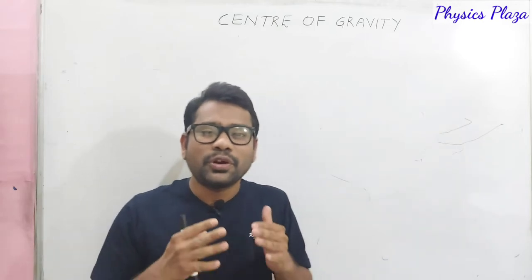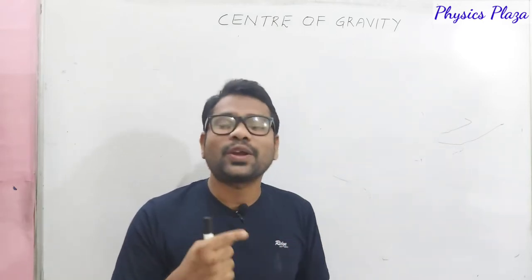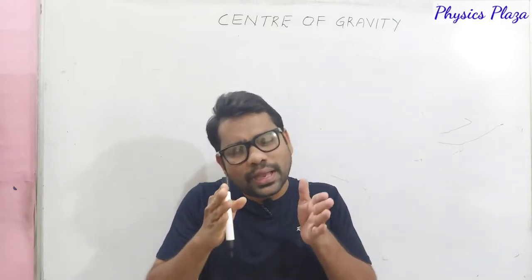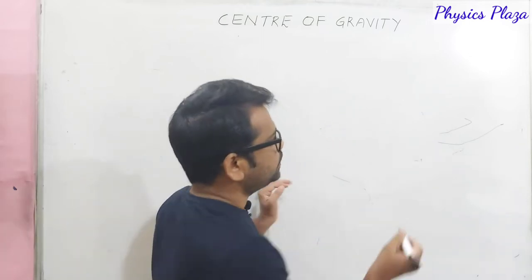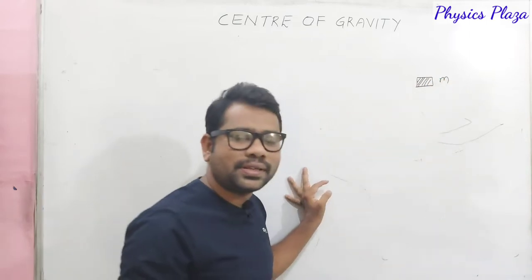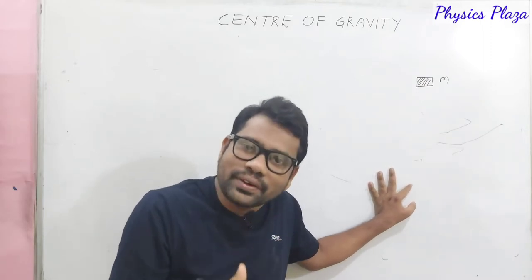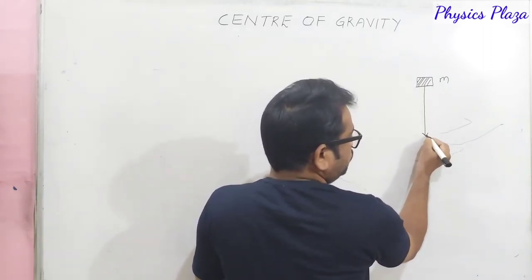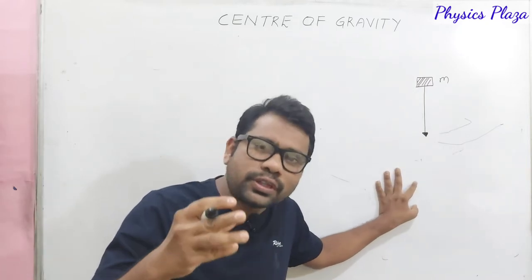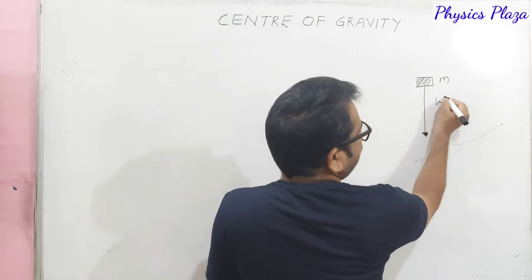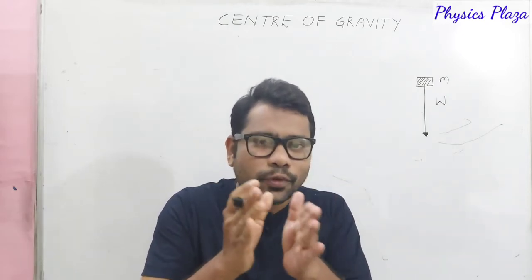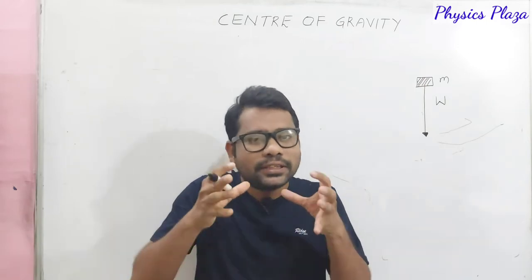Before learning what center of gravity is, let us recall once again the impact of gravitational force on bodies. If you consider any object near the earth's surface, each and every object is pulled by gravity towards the center of the earth — that is due to the gravitational force. Due to that only, there will be a weight. The main reason for the weight of an object is undoubtedly the force of gravity. As long as gravity exists, there will be some weight for every object near the earth's surface.